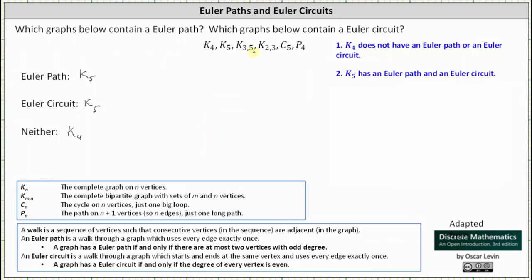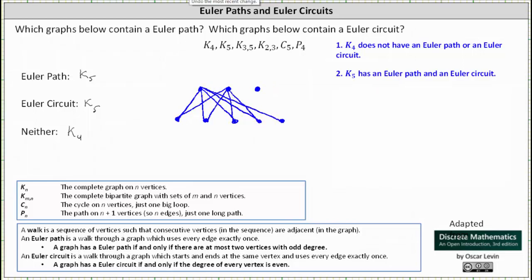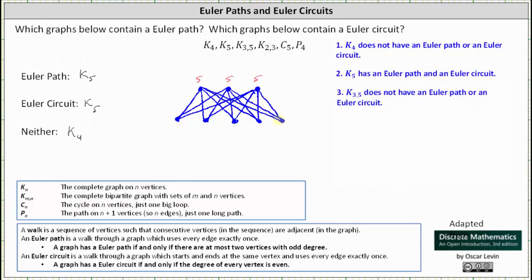Next, we have the complete bipartite graph K₃,₅, with sets of three and five vertices. Let the first row have three vertices and the second row have five vertices. Because we have a complete bipartite graph, each of the three vertices in the top row are adjacent to the five vertices in the second row. The vertices in the top row have degree five, and the five vertices in the bottom row are adjacent to the three vertices in the top row, so all vertices in the bottom row have degree three. All the vertices have an odd degree, so the graph does not have an Euler path and also does not have an Euler circuit. We list K₃,₅ under neither.